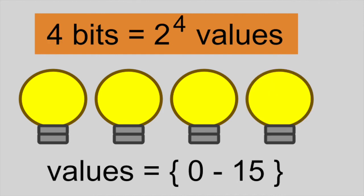And with 4 bits, we can represent 16 different values, 0 through 15.